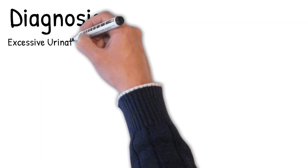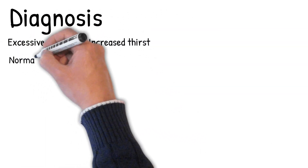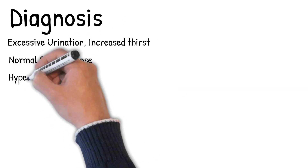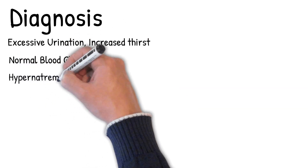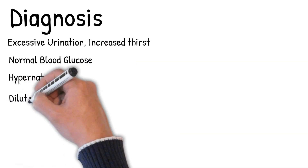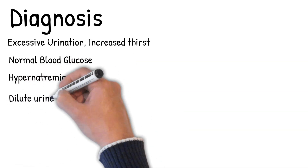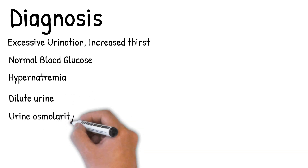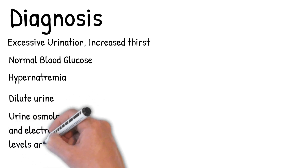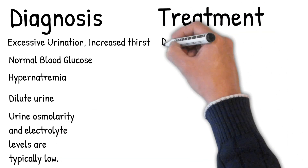To distinguish DI from other causes of excess urination, blood glucose levels, bicarbonate levels, and calcium levels need to be tested. Measurement of blood electrolytes can reveal a high sodium level, hypernatremia, as dehydration develops. Urinalysis demonstrates dilute urine with low specific gravity, and urine osmolarity and electrolyte levels are typically low.